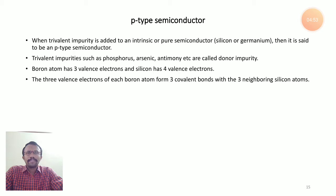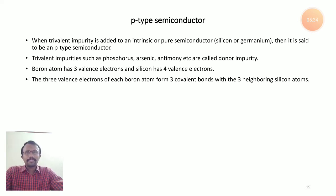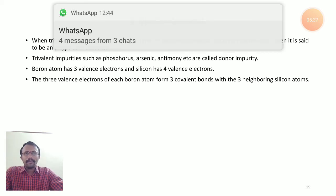The electrons concentration dominates hole concentration in n-type semiconductors. The majority charge carriers in n-type semiconductors are electrons; the minority charge carriers are holes. When an electric field is applied, the electrons in the n-type semiconductor are attracted toward the positive terminal of the applied voltage, and holes are attracted toward the negative terminal.